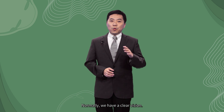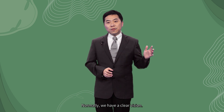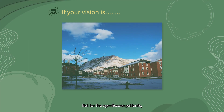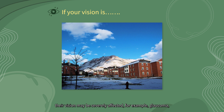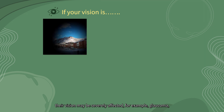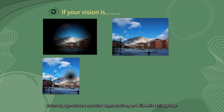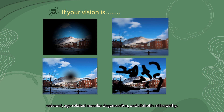Normally we have clear vision, but for eye disease patients their vision may be severely affected. For example, conditions such as glaucoma, cataract, age-related macular degeneration, and diabetic retinopathy can all impair vision. If your vision were like one of these, how would you feel?